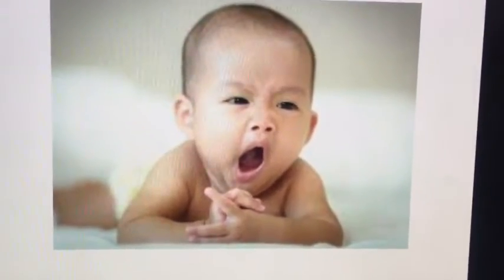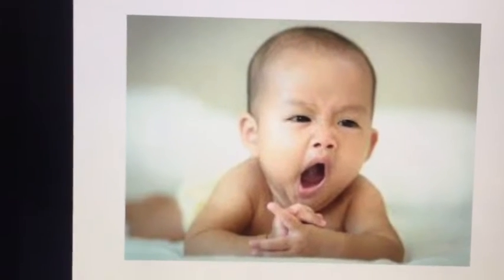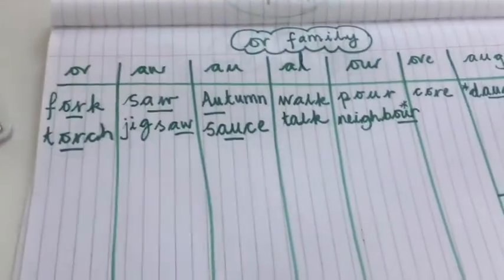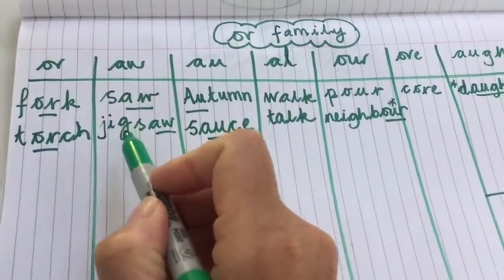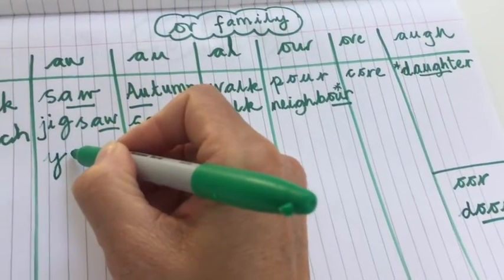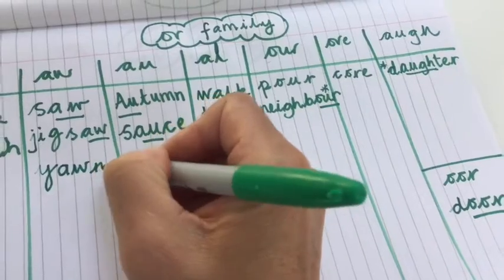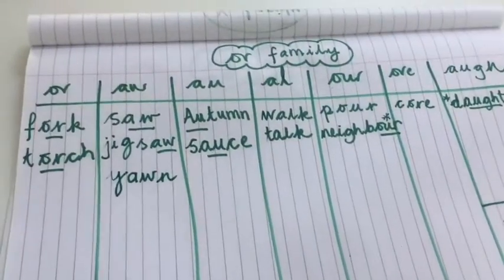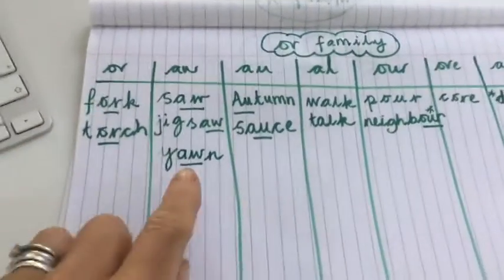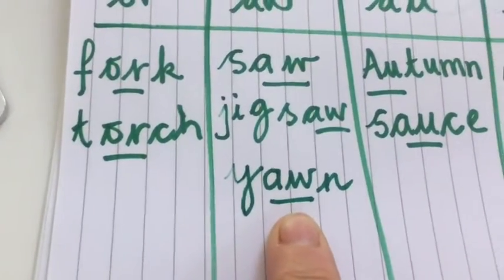Look at this little baby having a yawn — y-aw-n, yawn. You can hear the 'or' sound there in the middle of the word. Starting with the 'y,' then the 'aw' for the 'or' sound, and the 'n' sound at the end. Yawn — fantastic!